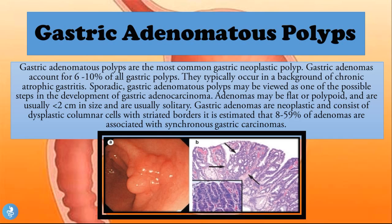Gastric adenomatous polyps are the most common gastric neoplastic polyp — meaning they have the highest malignant potential. Gastric adenomas account for six to ten percent of all gastric polyps, so they are not the most frequently found, but they carry the greatest risk of malignancy.